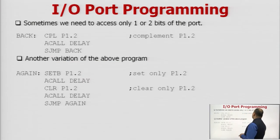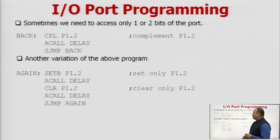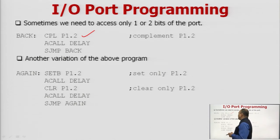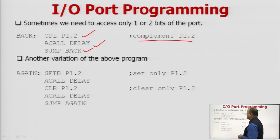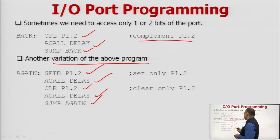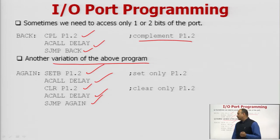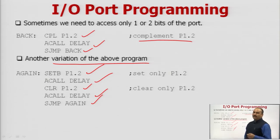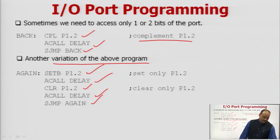Sometimes we need to access only 1 or 2 bits of a port. In the 8051, the ports are bit-addressable, meaning we can set or reset individual bits of the port. With the instruction CPL P1.2, we can complement bit 2 of port P1. Another variation uses SETB P1.2 to set the bit, call delay, CLR P1.2 to clear the bit, call delay, and jump again. These programs demonstrate bit manipulation operations on the ports.